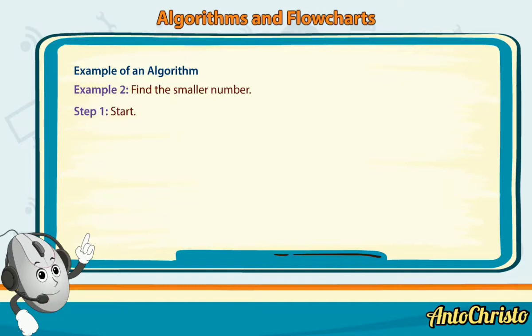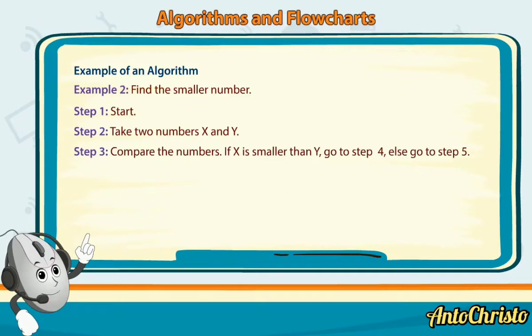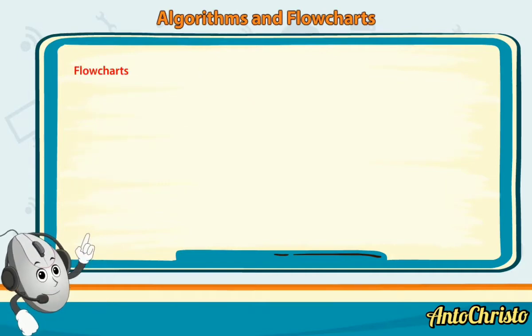Example 2: Find the smaller number. Step 1: Start. Step 2: Take 2 numbers X and Y. Step 3: Compare the numbers. If X is smaller than Y, go to step 4. Else go to step 5. Step 4: Print X is smaller. Step 5: Print Y is smaller. Step 6: Stop.